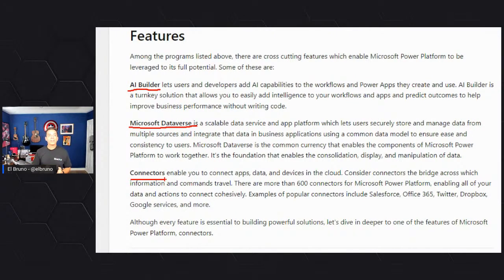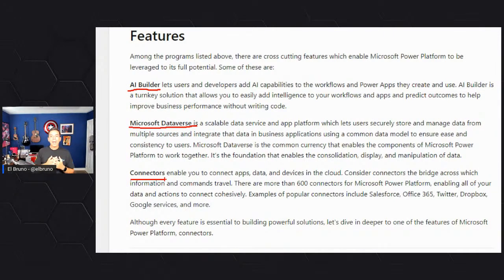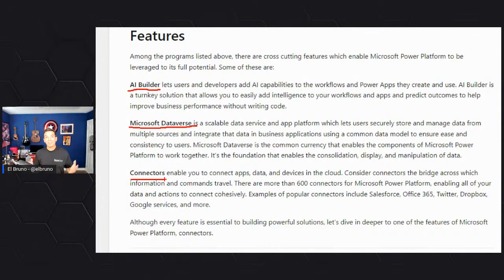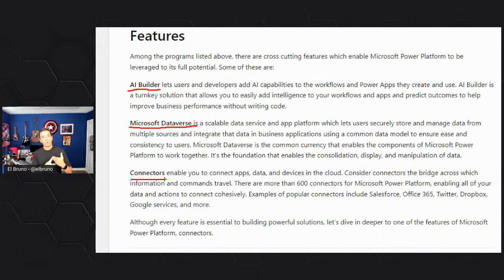Then we have the Dataverse — basically a big, secure repository or database that we can use to store information, and we can use it to integrate information from Excel files, SQL Server databases, SharePoint files, and many places, then use this Dataverse in our applications. Finally, connectors. Connectors are one of the most amazing things in the Power Platform because with them we can basically connect everything. In the email processing scenario we talked about, we used three connectors: one to connect with email, one to save to OneDrive, and one to send messages to Teams.